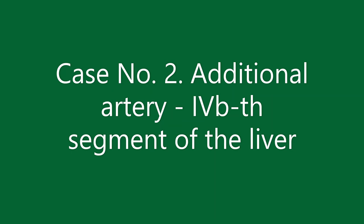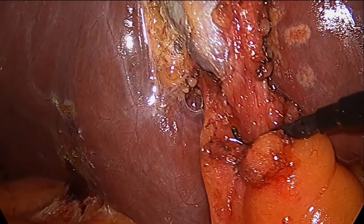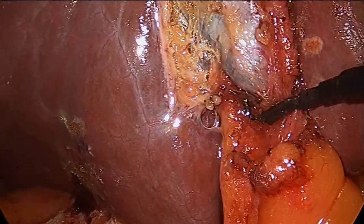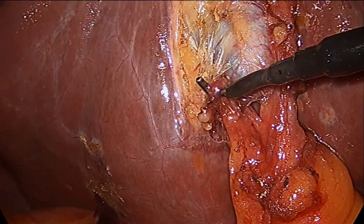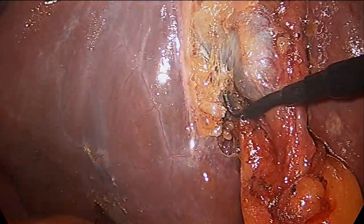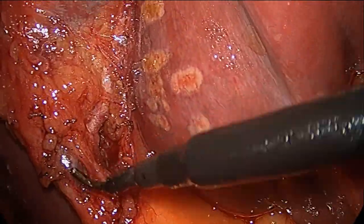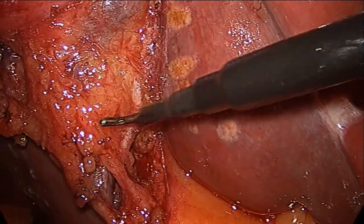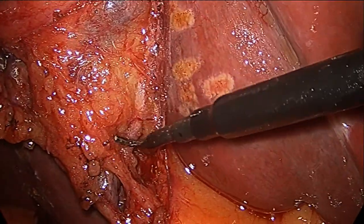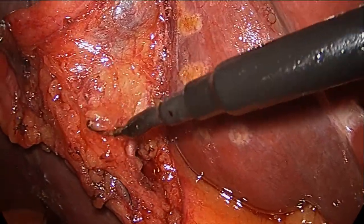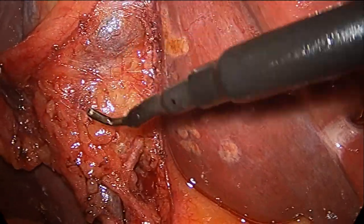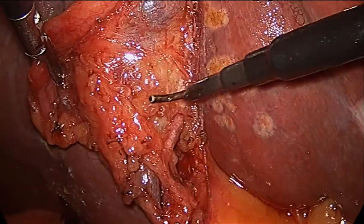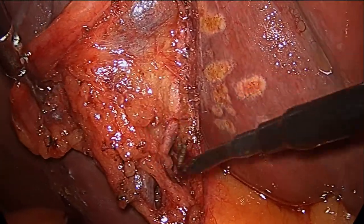The second case is an additional artery of the first B segment of the liver. The operation was performed on a gentleman with gallbladder polyposis. We again see a typical picture — two structures are highlighted which go to the gallbladder. However, I am confused by the tubular structure located at the back wall of the gallbladder, and I again try to dissect the adipose and fibrous tissue for better visualization.